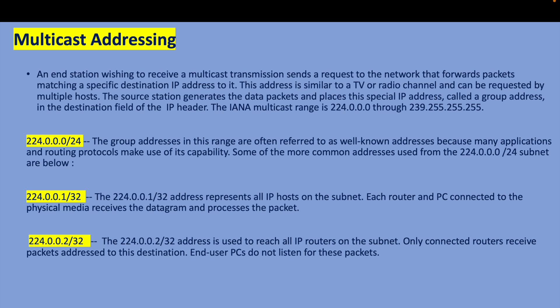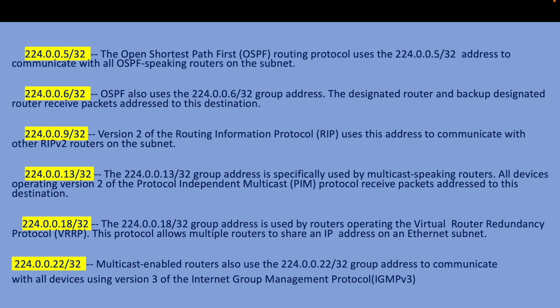Common well-known multicast addresses include: 224.0.0.1 for all IP hosts on the subnet; 224.0.0.2 for all IP routers on the subnet; 224.0.0.5 and 224.0.0.6 for OSPF; 224.0.0.9 for RIP version 2; 224.0.0.13 for PIM (Protocol Independent Multicast); 224.0.0.18 for VRRP; and 224.0.0.22 for IGMP version 3.